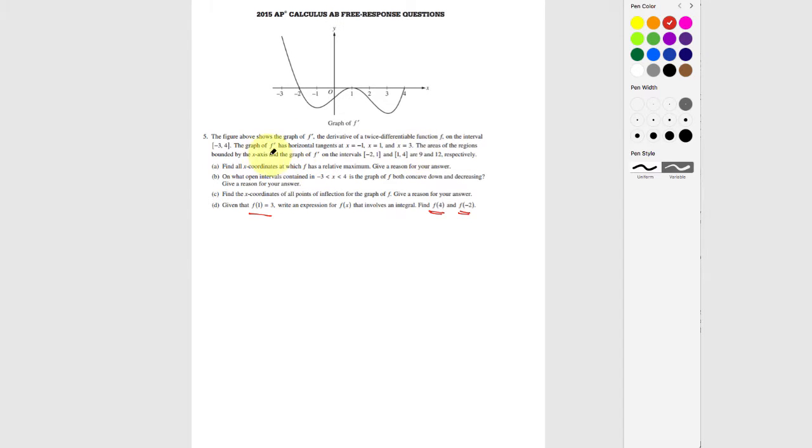Also, if we read through the problem, they tell us that the area between negative 2 and 1 under the curve is 9, so this area is 9, and then this area between 1 and 4 is 12, so we know that this area underneath of there is 12. We're going to probably use that information when we're solving.